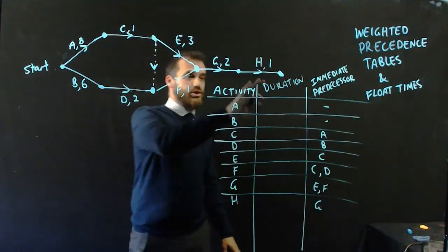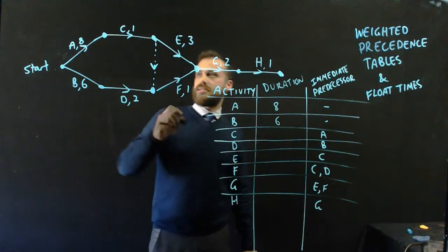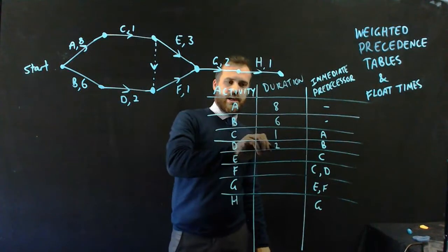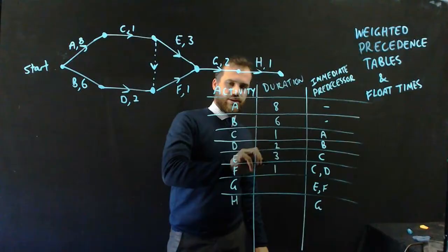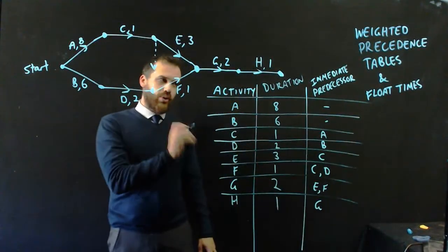And now I'm just going to fill out this duration column. So A takes 8, B takes 6, C takes 1, D takes 2, E takes 3, F takes 1, G takes 2, and H takes 1.